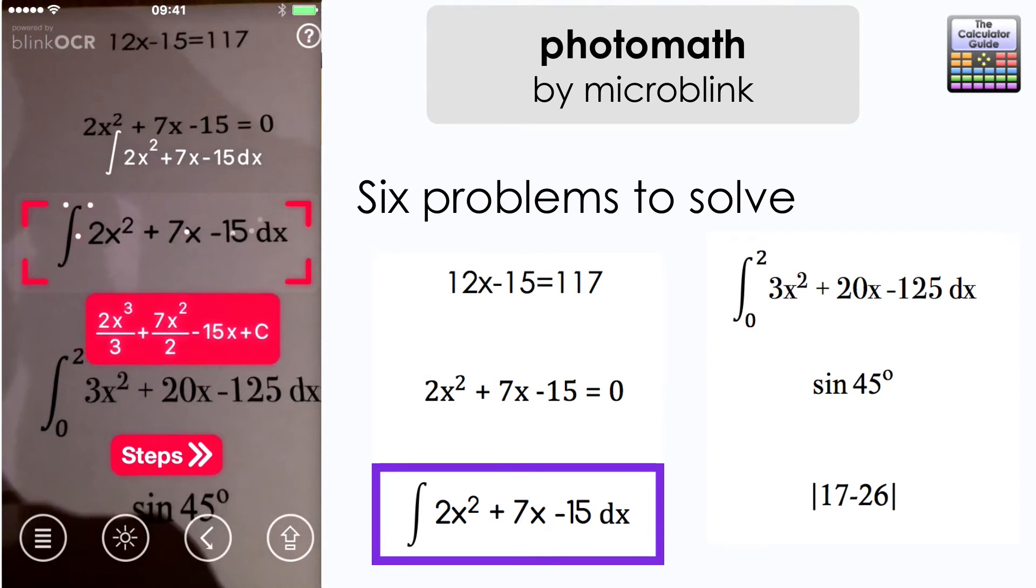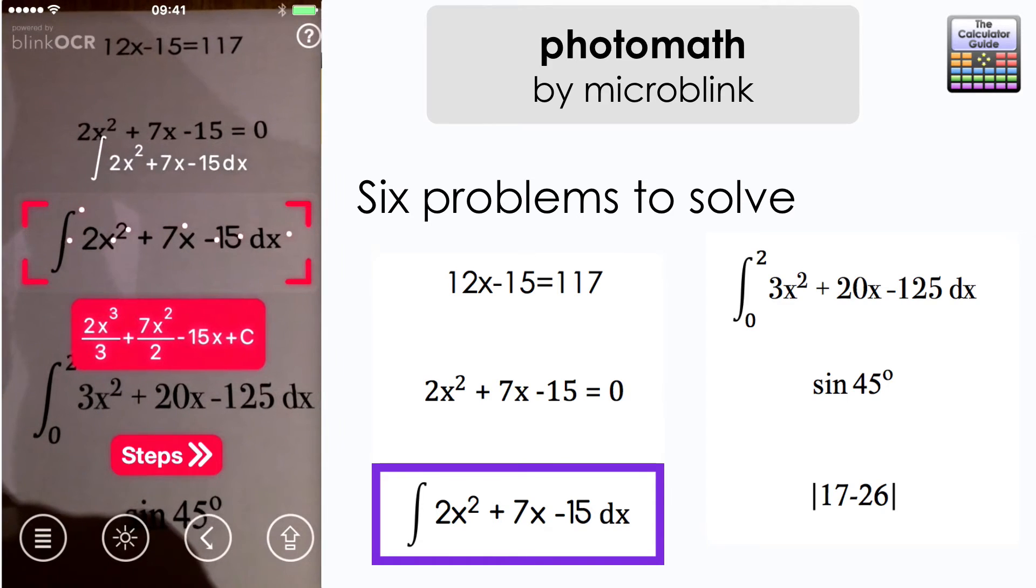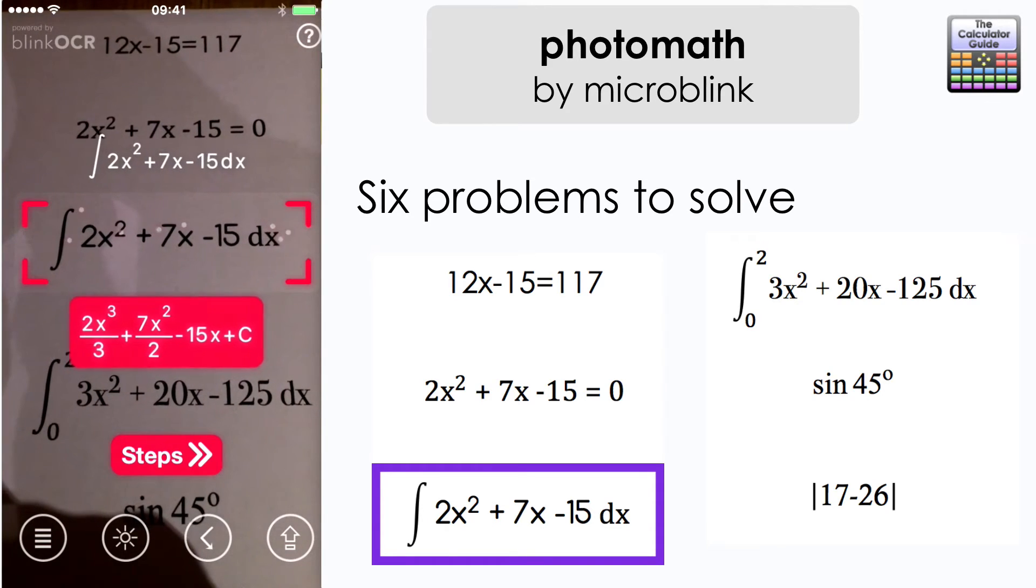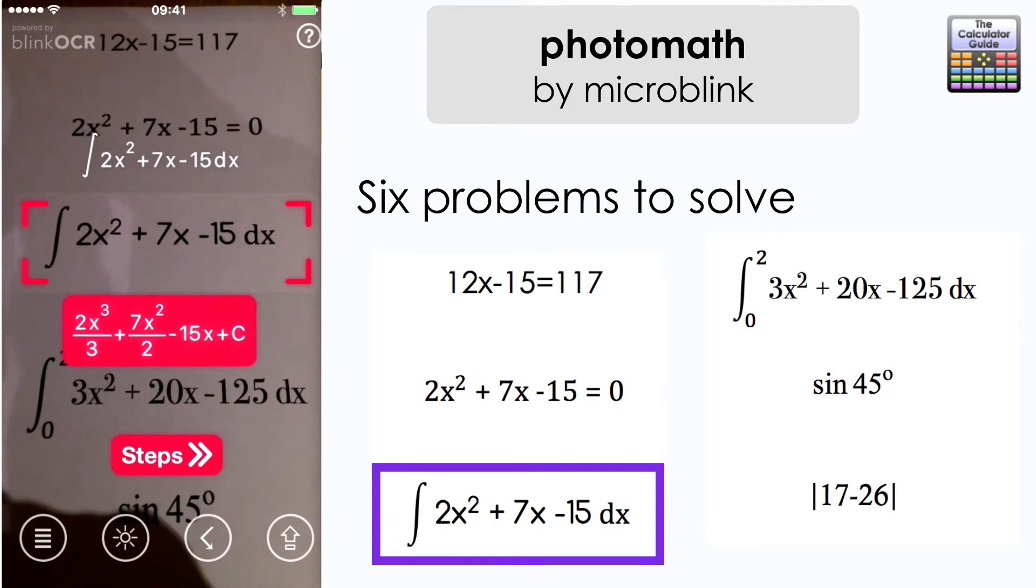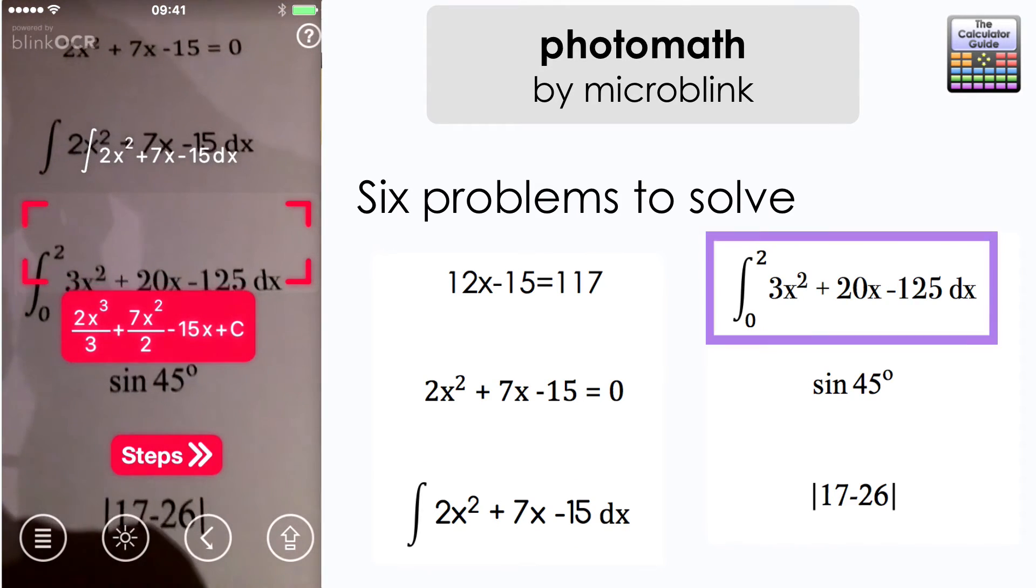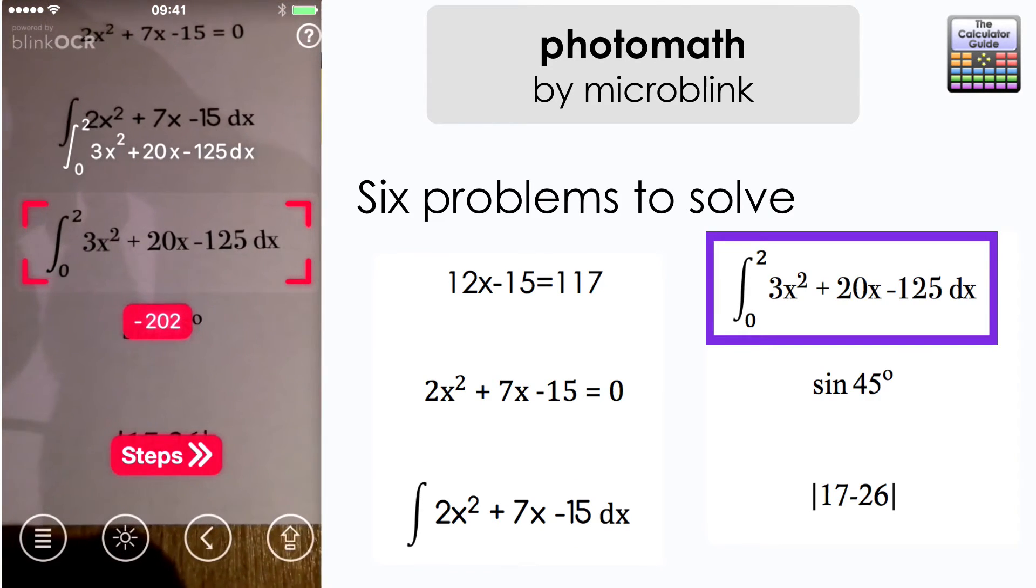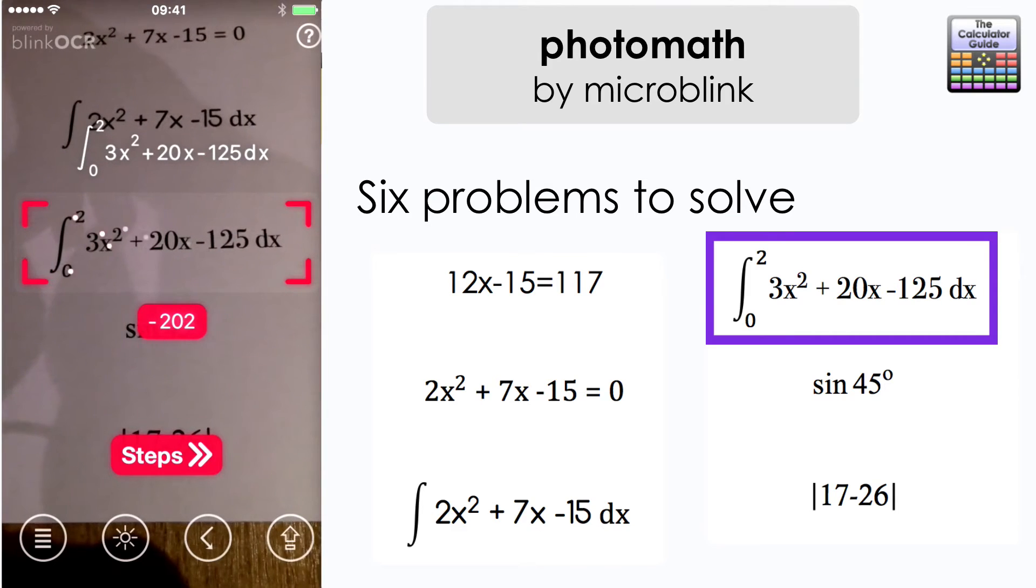Moving on to the next problem here we have an indefinite integral and it's calculated that for us including the plus c, very important. And now we also have a definite integral and it's got the value of that there minus 202.